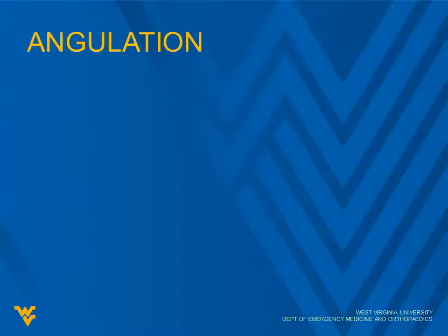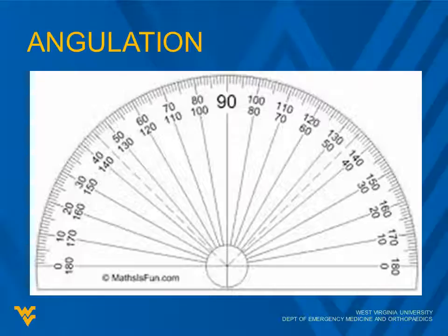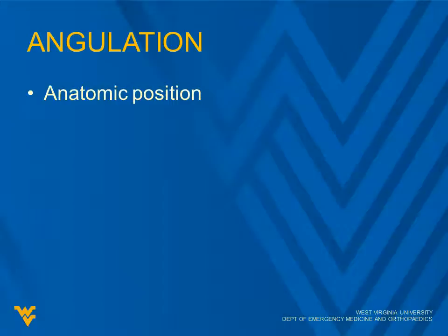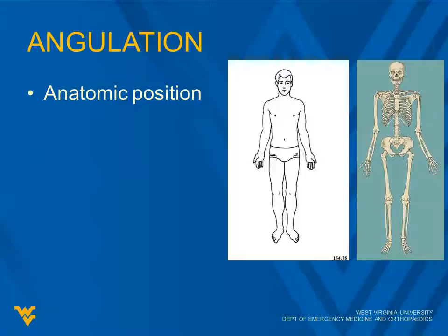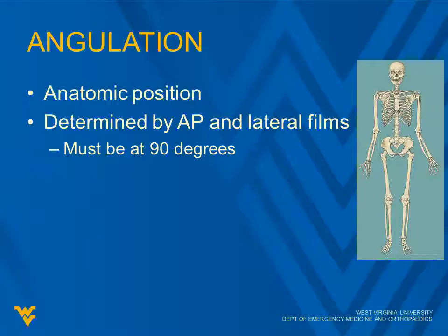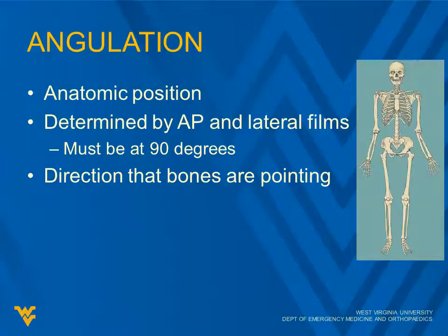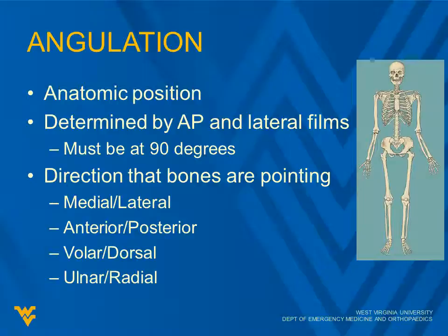So, angulation. We all remember our protractor — of course, math is fun. First, we have to remember the anatomic position — it's the person standing awkwardly in their underwear with hands out to the side. It's determined by AP and lateral films, and those must be at 90 degrees to each other. The easiest way to remember angulation is that it is the direction that the bones are pointing. If you think of the fracture as an arrow, it would be the way that the arrow is pointing.